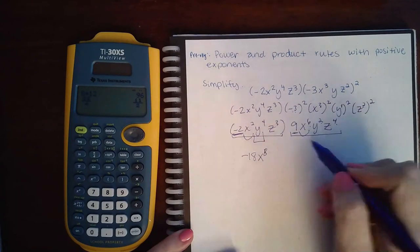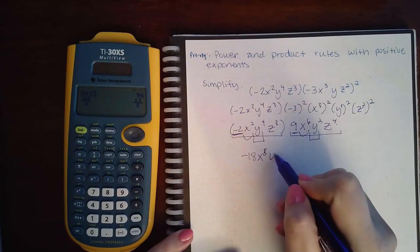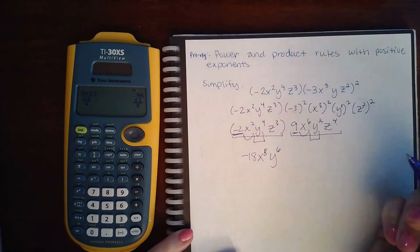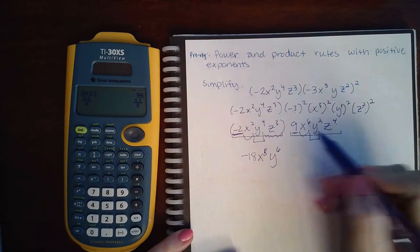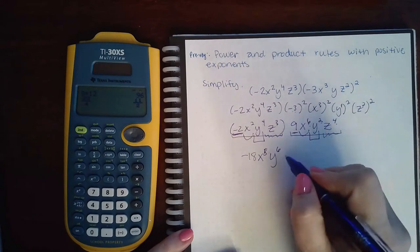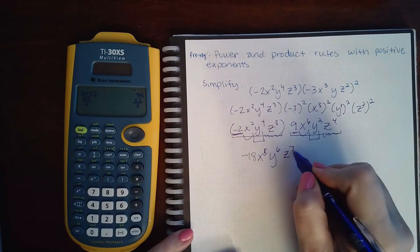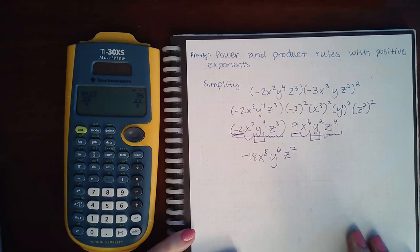Then Y to the fourth times Y squared. Again, you add the exponents, you get Y to the sixth. And then Z cubed and Z to the fourth is going to give me Z to the seventh. Again, adding those exponents.